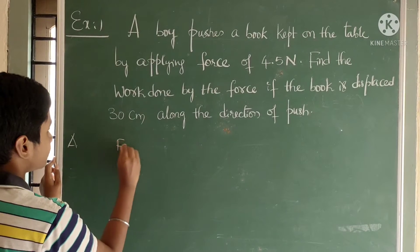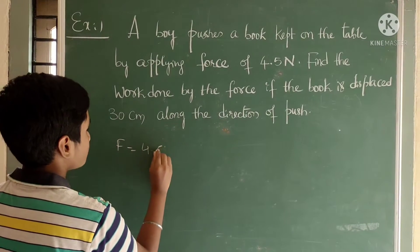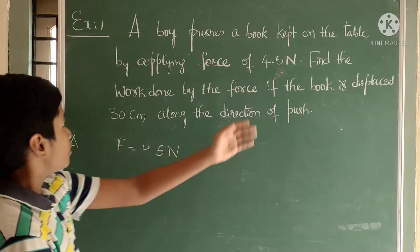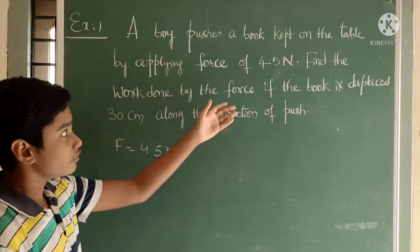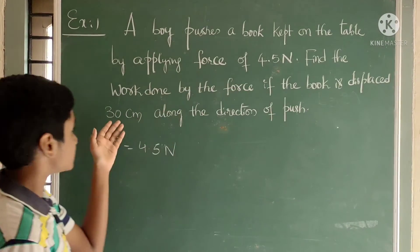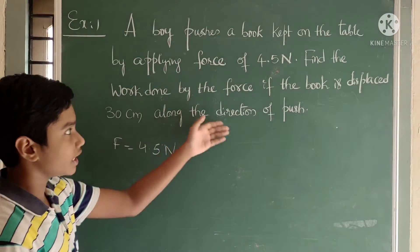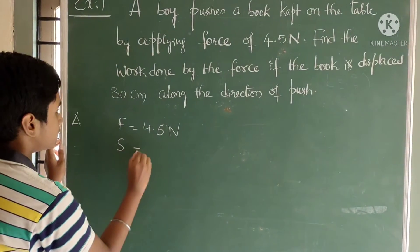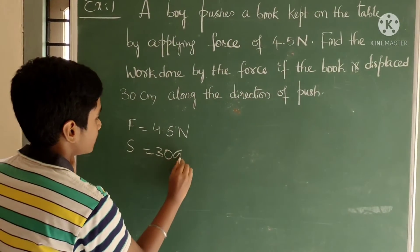That means F is equal to 4.5 newtons. Find the work done by the force if the book is displaced 30 centimeters along the direction of push. That means displacement S is equal to 30 centimeters.